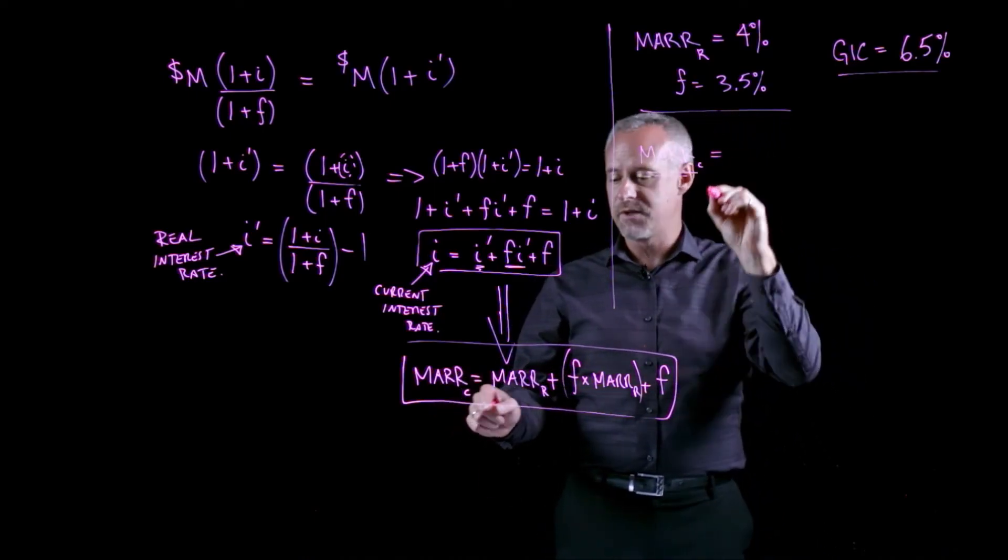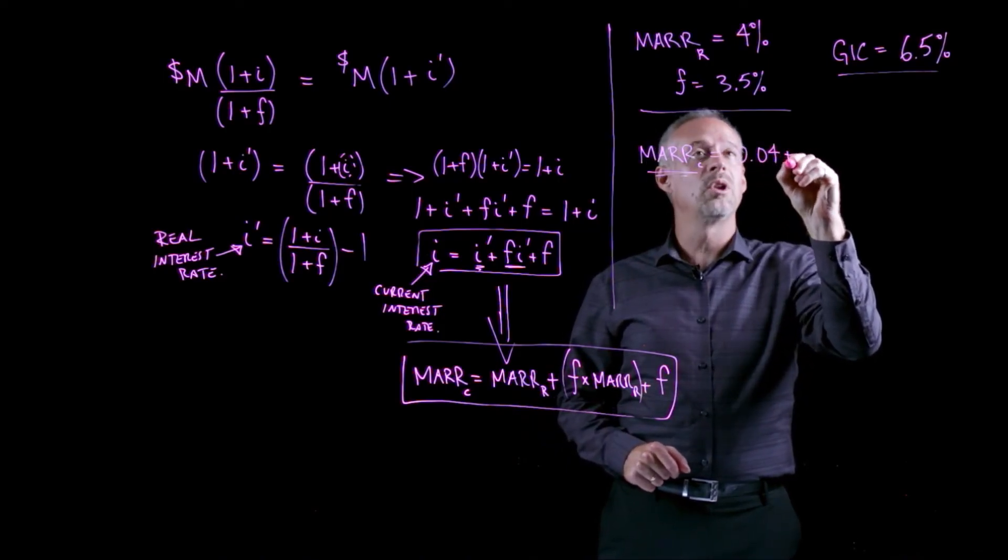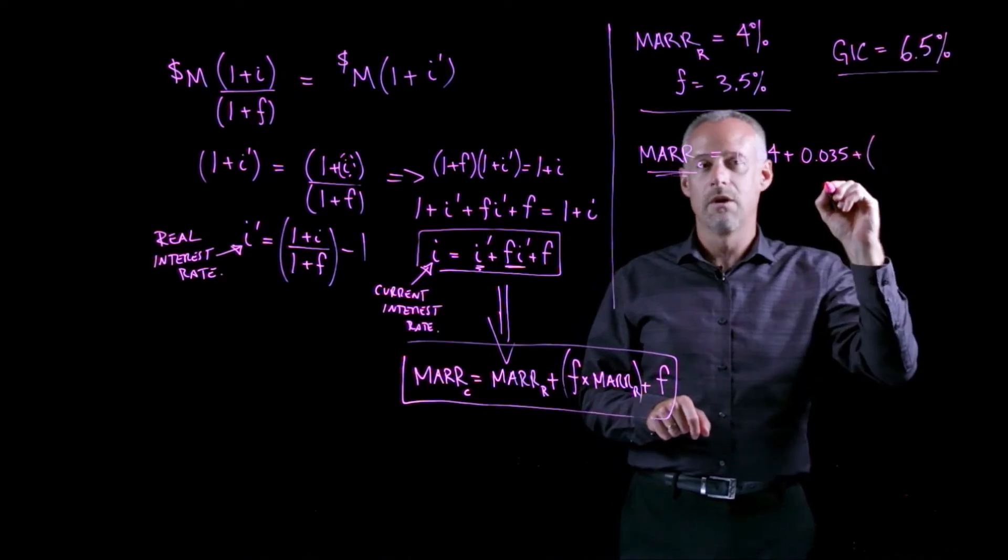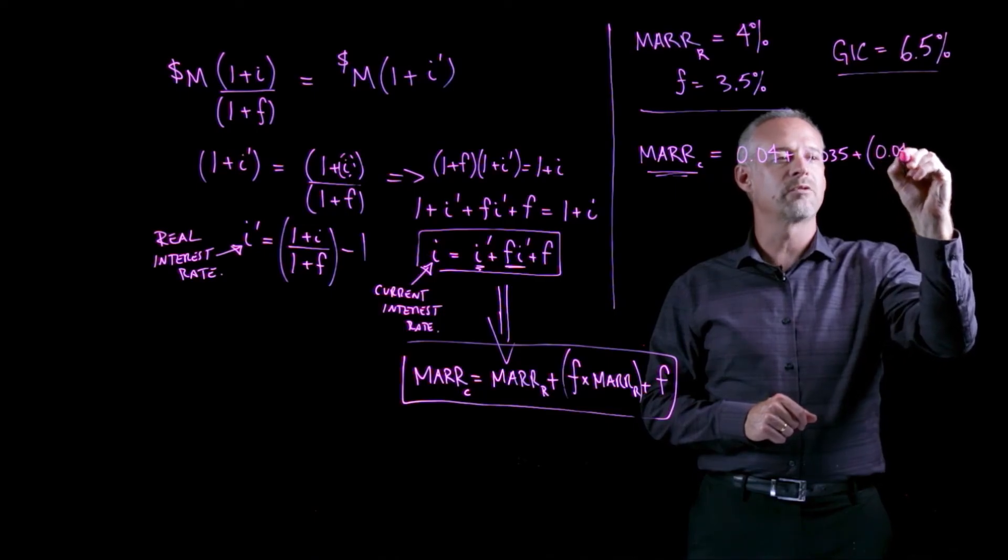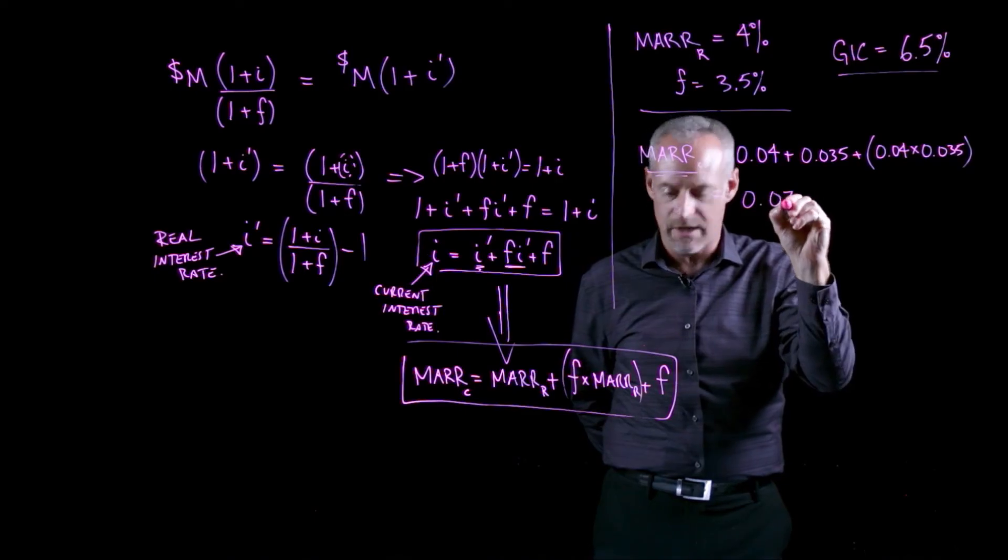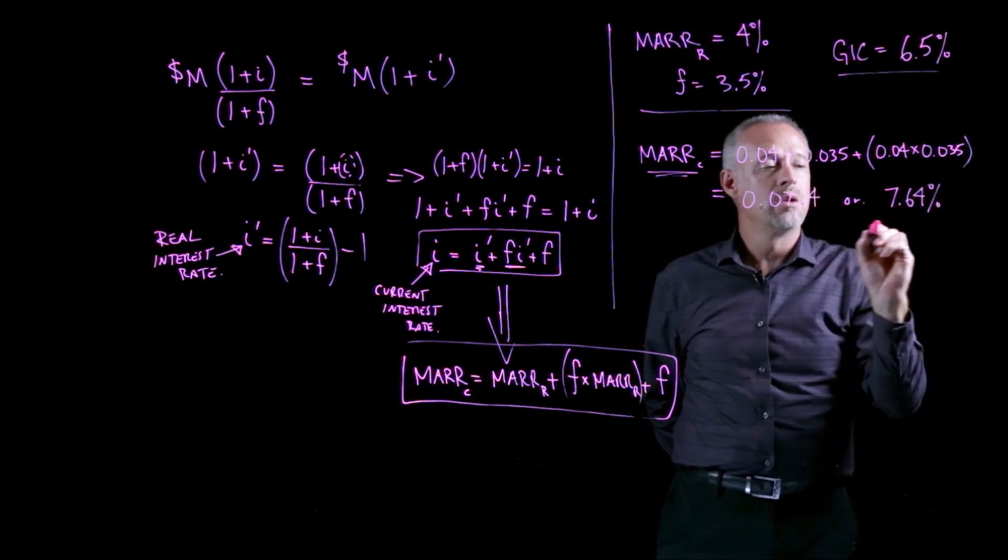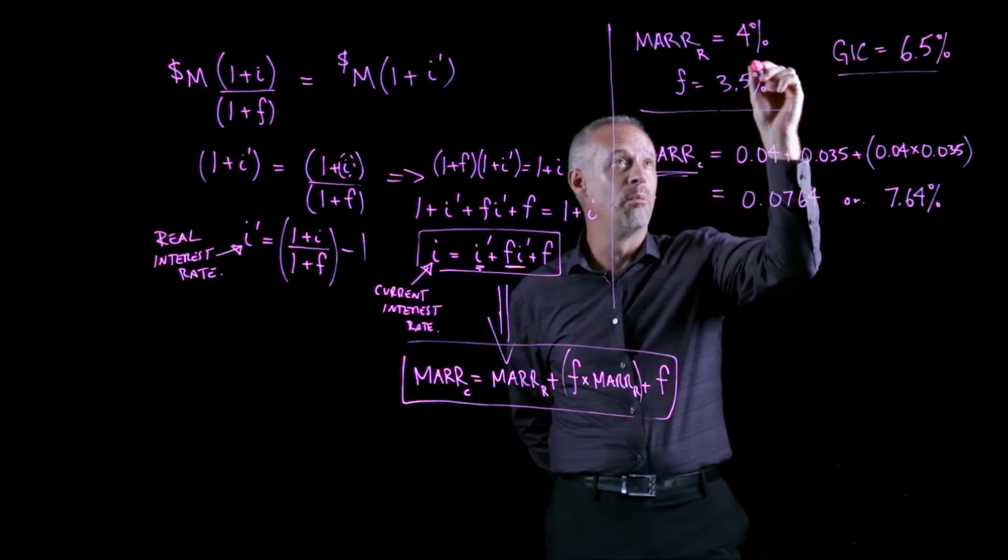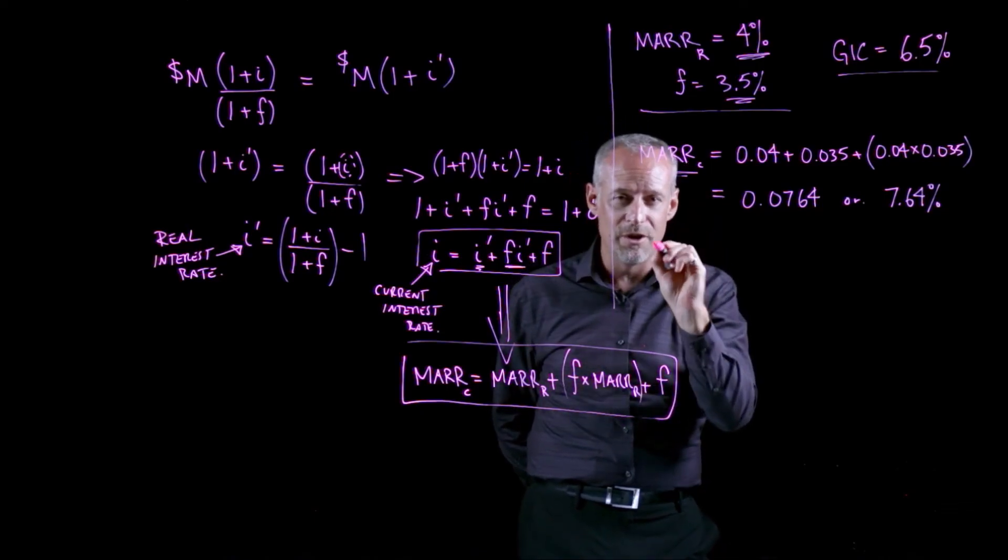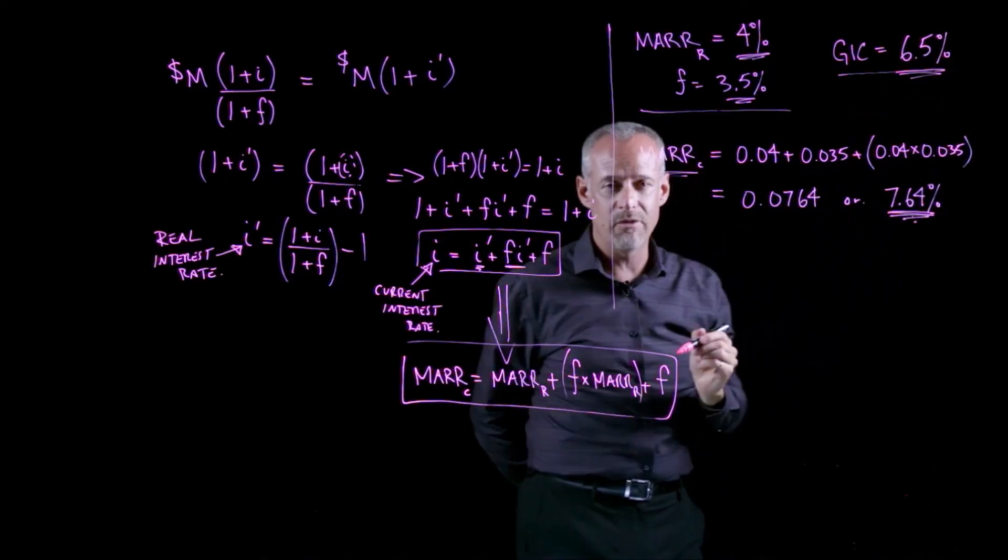So, I can go back to my formula, and I can say that this individual's current MARR is going to be equal to the real MARR, which is the 4% plus the 3.5% inflation plus the product of these two. And that comes from our formula. And what I find is this value comes out to 0.0764 or 7.64%. So, what this means is that if this person has a real MARR of 4%, inflation is going to be 3%, their minimum attractive rate of return in the current dollar world is going to be 7.64%.